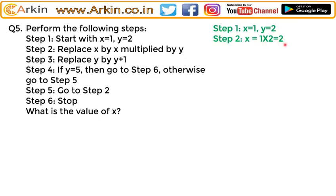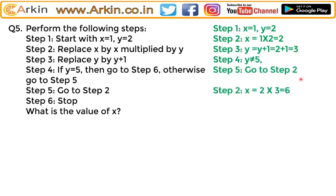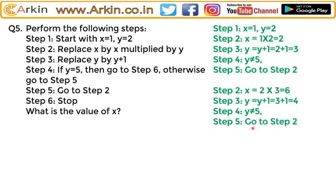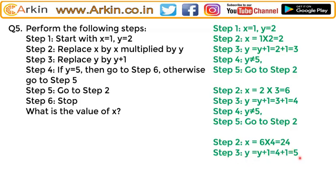Here y is not equal to 5 so we go back to step 2 again: x equals 2 into 3, and y equals y plus 1 = 4. Again y is not equal to 5, so we go back to step 2: x equals 6 into 4 = 24, and y equals y plus 1 = 5. Now y equals 5, so we go to step 6 — stop. Here x equals 24, so that is the value of x.